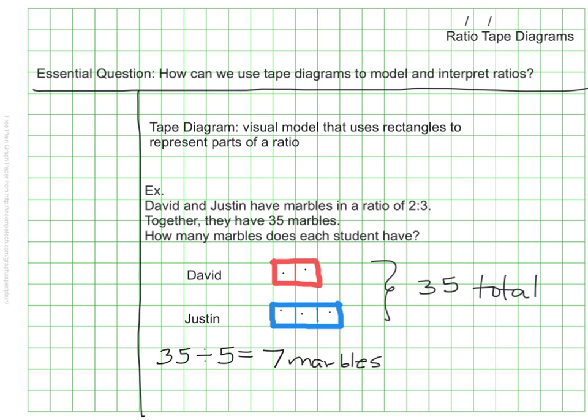Since David has two of these I know he must have 14 marbles and since Justin has three of these I know he must have 21 marbles and a quick check 14 plus 21 does make the 35 total.